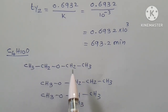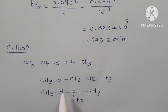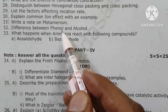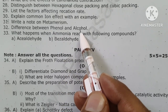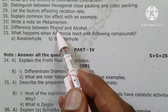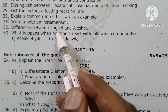Examples of metamerism: ethoxyethane, 1-methoxypropane, 2-methoxypropane — all have the same molecular formula and same functional group (ether) but different alkyl groups. This is called metamerism.